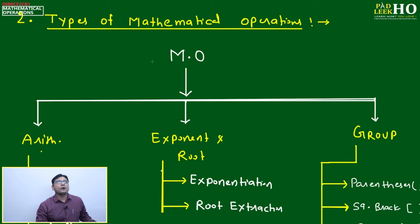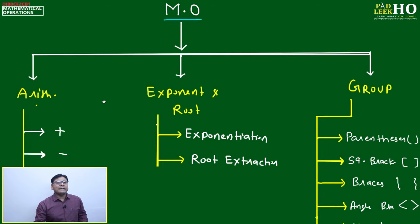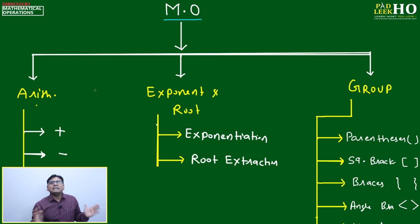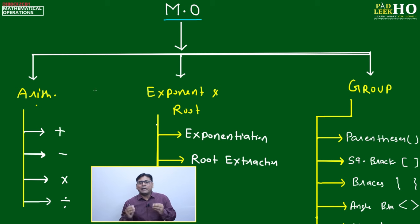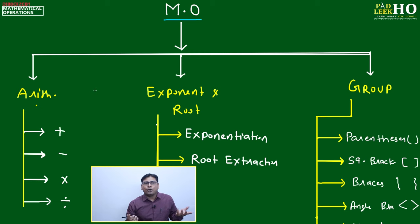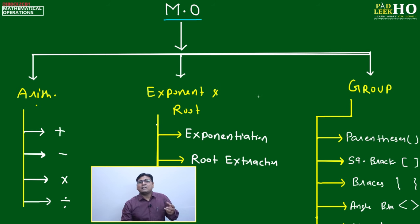Let's categorize all types of mathematical operations. I have written 'MO' as shorthand for mathematical operations. Mathematical operations can be divided into three categories — note this is not a standard academic categorization, but is done for ease of understanding and for your CAT preparation, to help you use the basic concepts better.